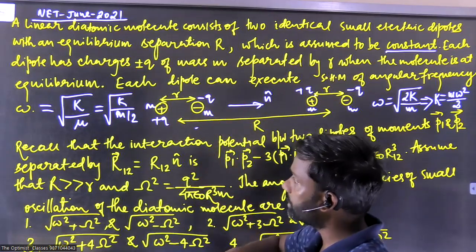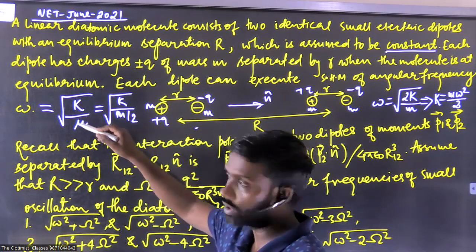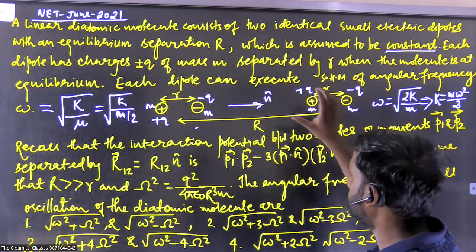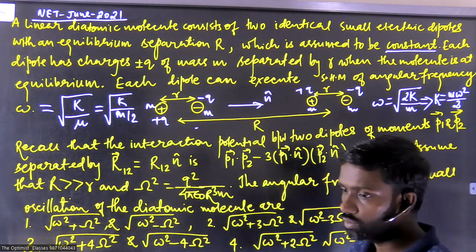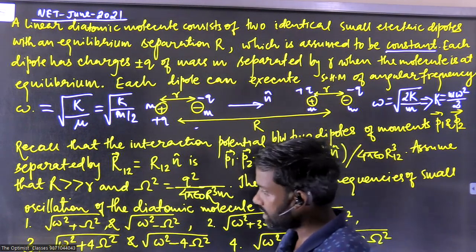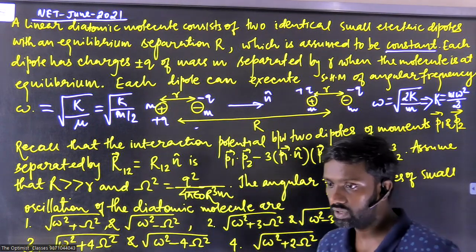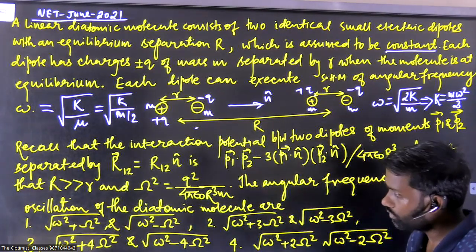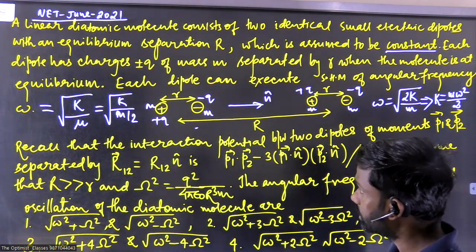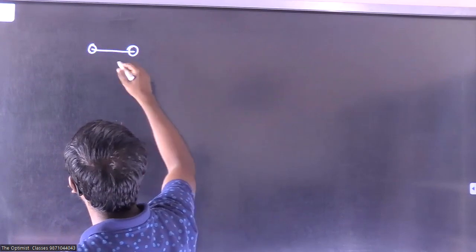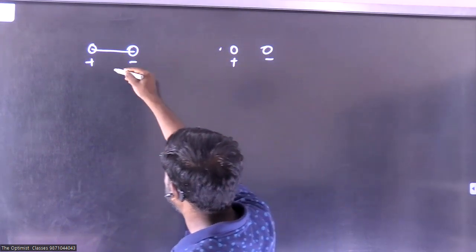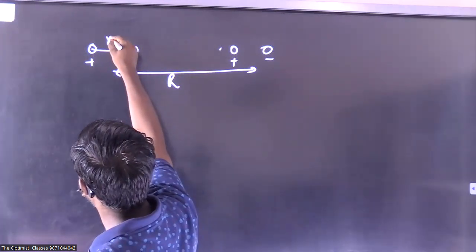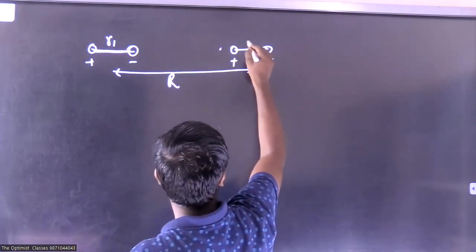Each dipole's individual angular frequency is omega = sqrt(k/mu). But now each dipole oscillates under the influence of the other dipole. We need to find the angular frequencies of the normal modes of oscillation — modes in which both molecules vibrate with the same frequency. During vibration, the separation between charges in dipole 1 becomes r1 and in dipole 2 becomes r2, while capital R remains constant.